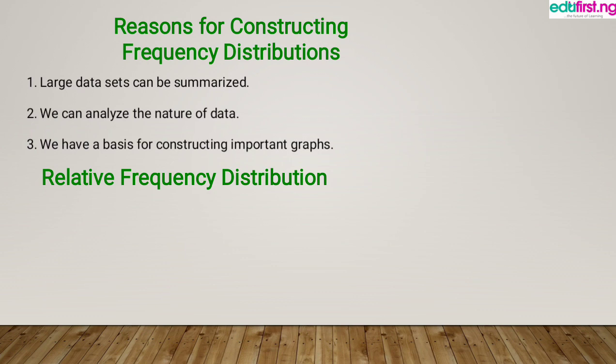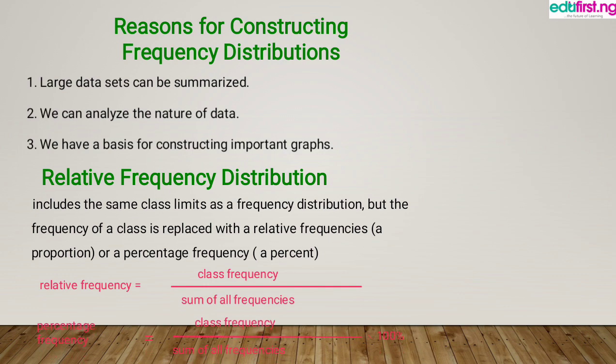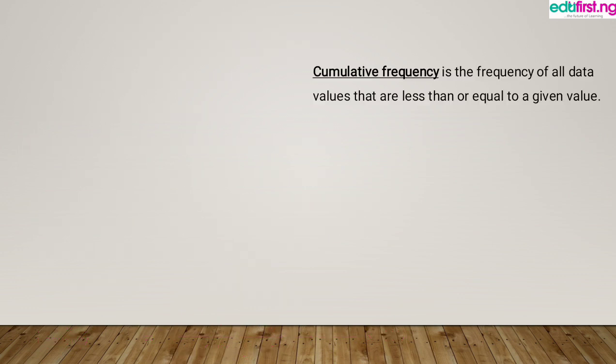Now let's talk about the relative frequency distribution. It includes the same class limits as a frequency distribution, but the frequency of a class is replaced with a relative frequency — that is, a proportion or a percentage. The formula to get the relative frequency is: relative frequency equals class frequency divided by the sum of all frequencies. And when we want to find the percentage frequency, we multiply it by 100.